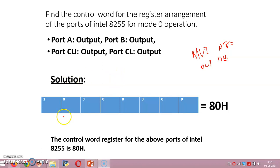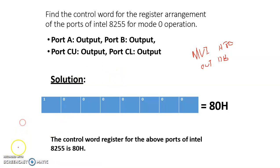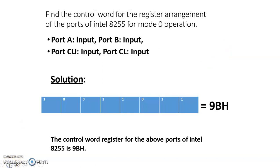Let's have one more example of programming Intel 8255. Find the control word for the register arrangement of the ports of 8255 for mode 0 operation: port A input, port B input, port C upper input, port C lower input — all the ports are input ports and all these are in mode 0 operation. Let's assume that we have to program the second unit of 8255.